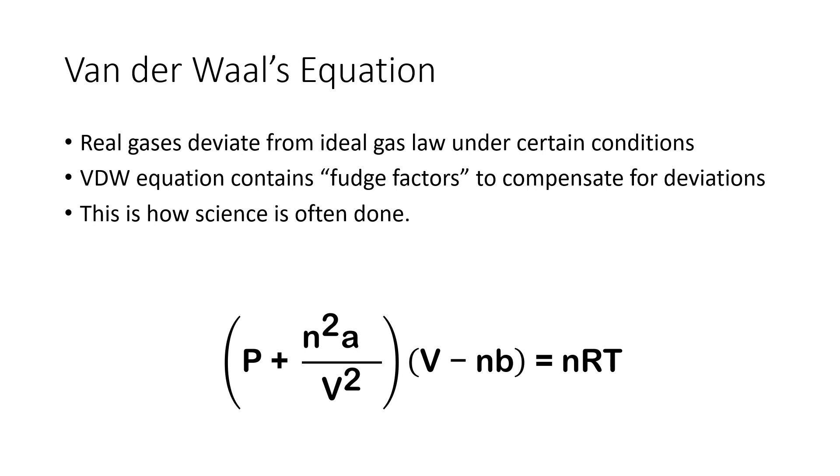And the van der Waals equation was proposed to take that into account. And the way I think of it is that the van der Waals equation contains fudge factors to accommodate or to compensate for these deviations from ideal behavior. And frankly, this is how science is often done. We may have an equation or an idea that works really well under many conditions, just not all of them. So instead of throwing that equation away, we can do what we can to salvage it.